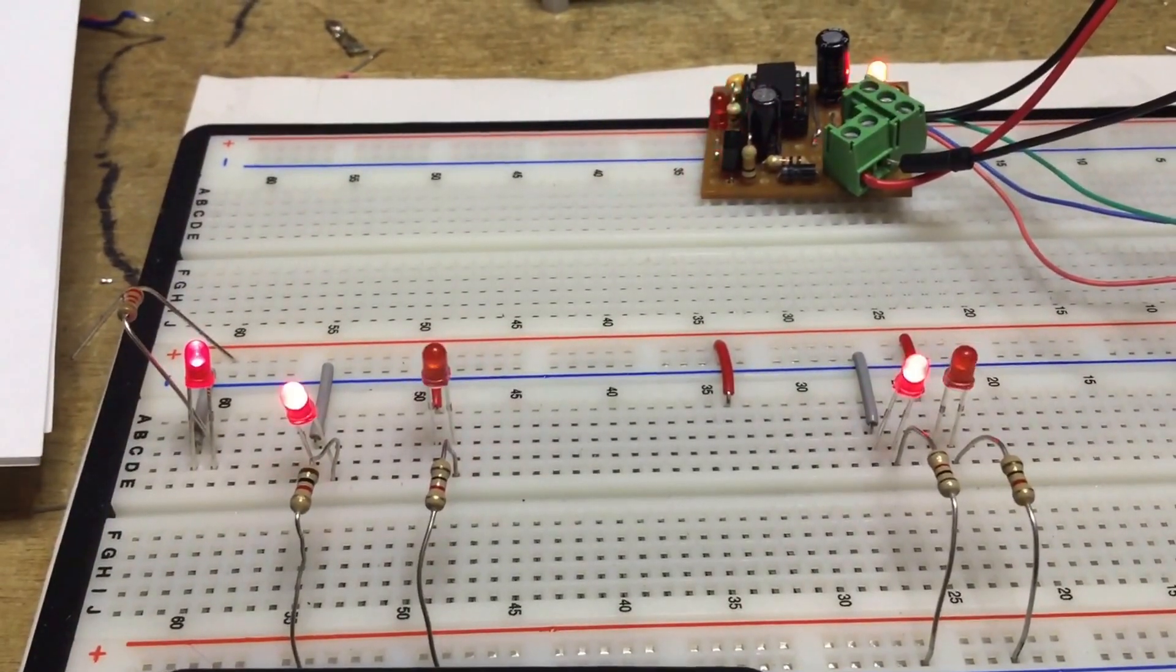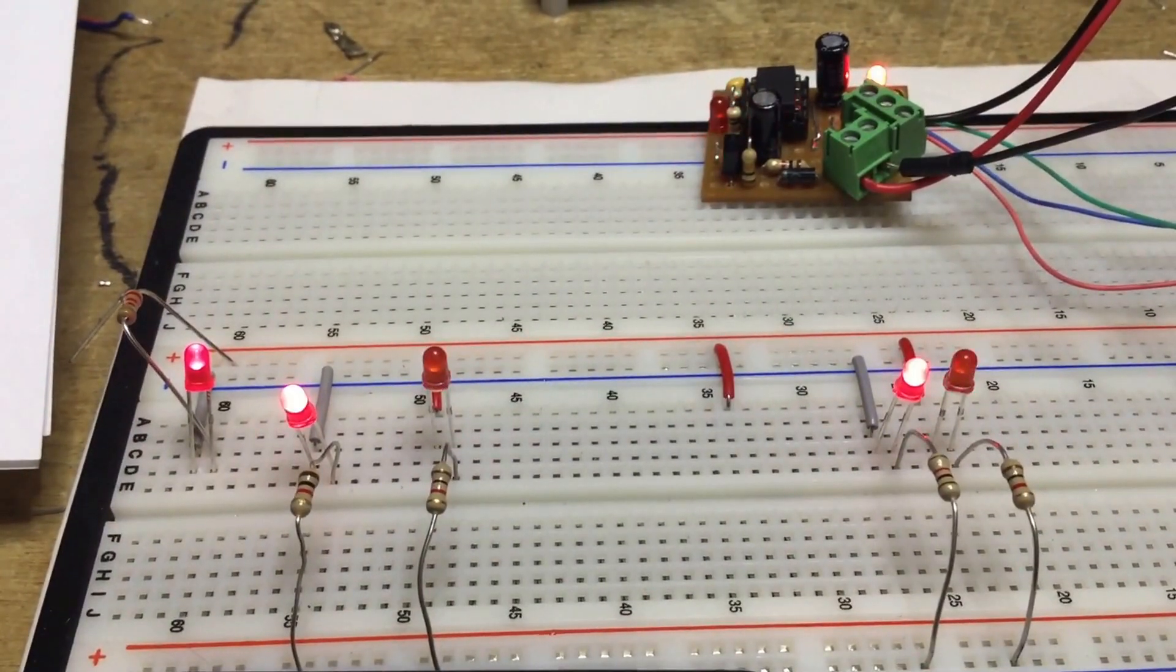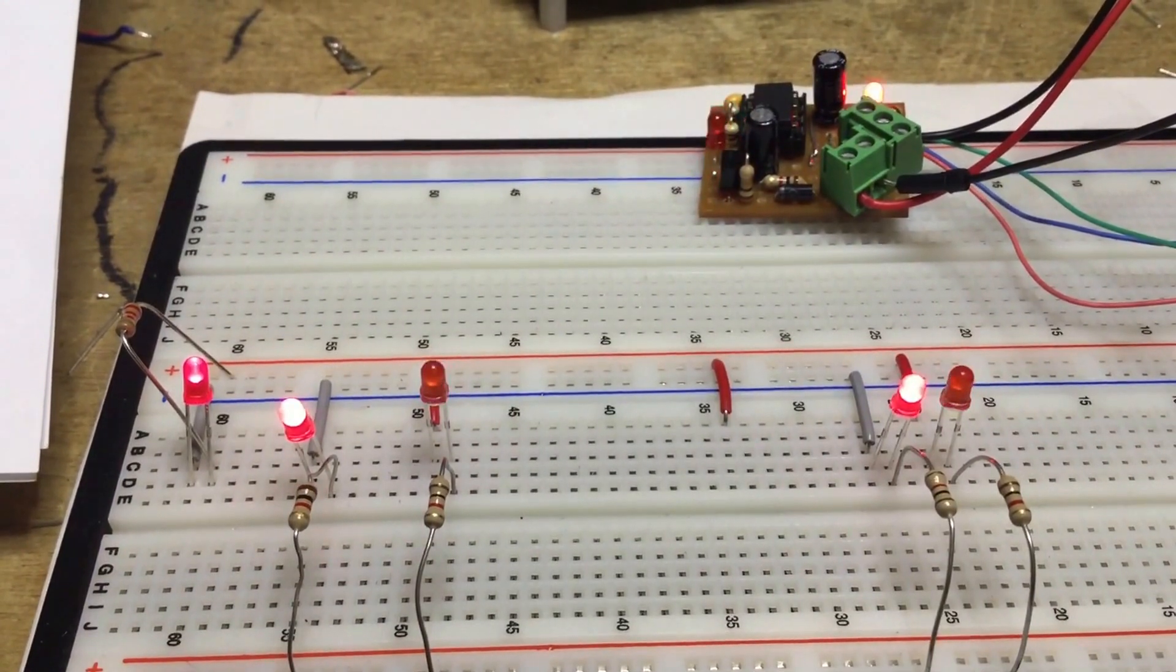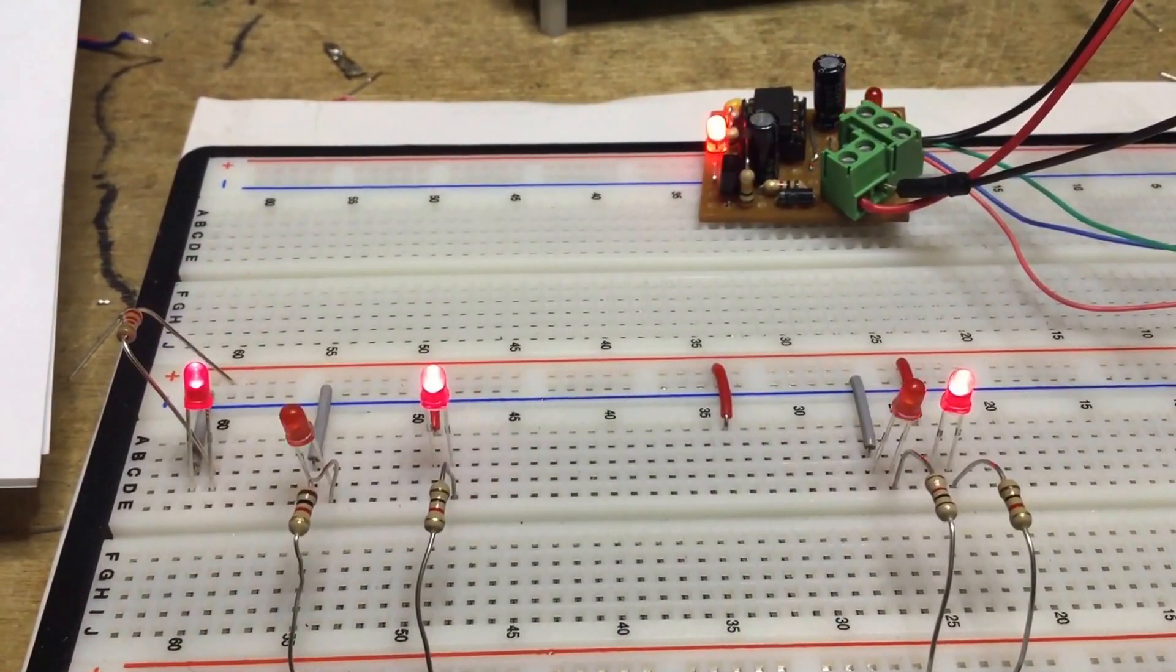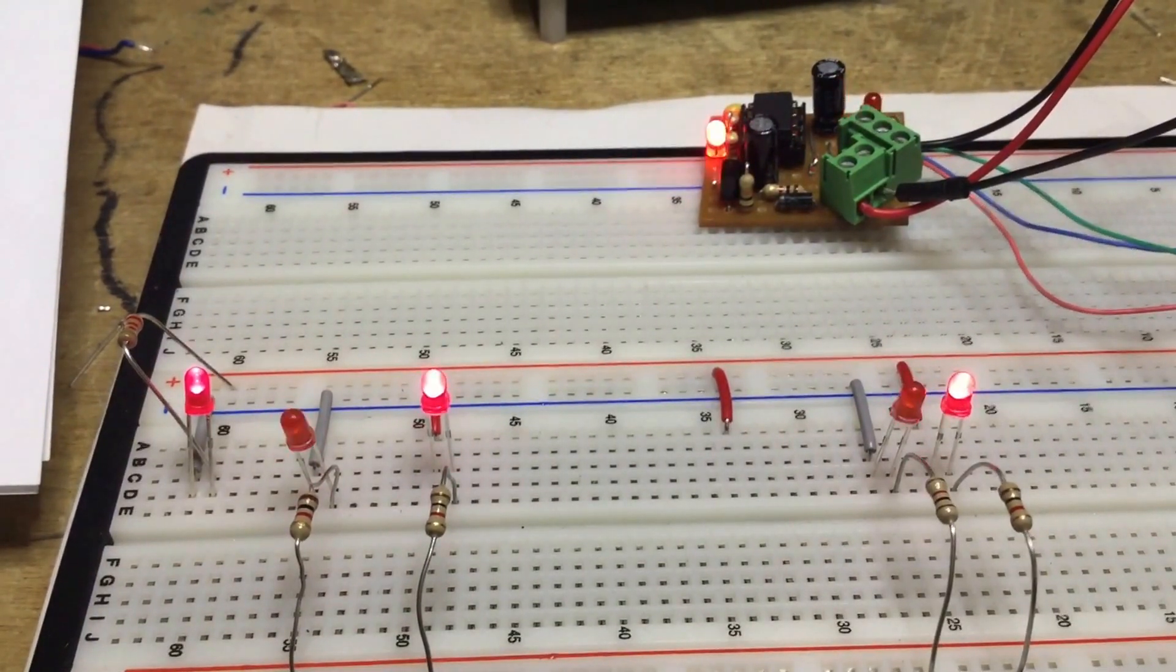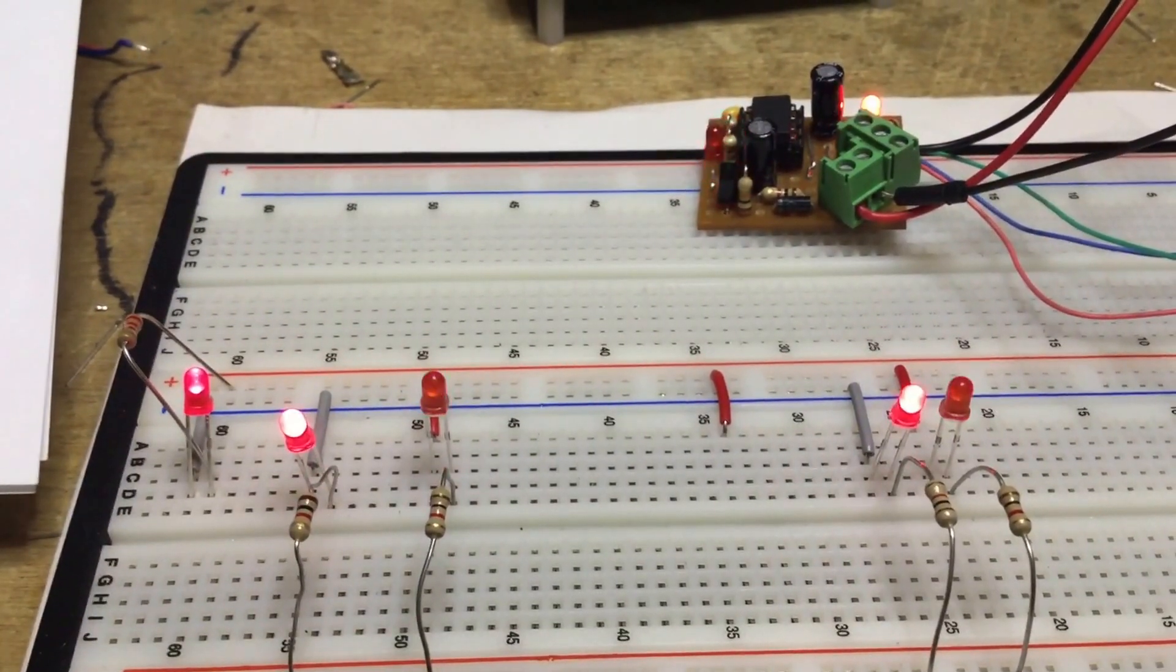I think that's all. I did mention the BC 327 swap out if you want to get more current, but I can't see anyone needing that. That's it guys, thanks.